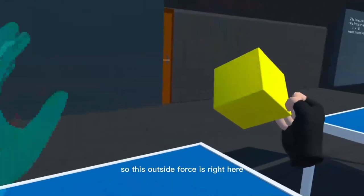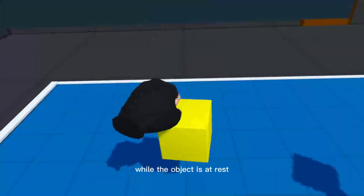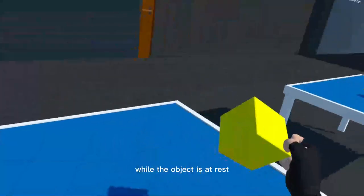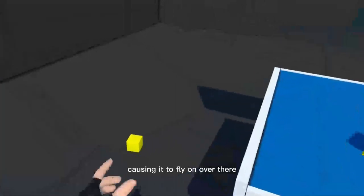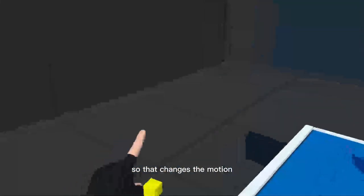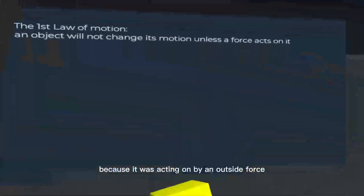This outside force is right here while the object is at rest. The outside force comes along and moves it, causing it to fly over there. That changes the motion because it was acted on by an outside force.